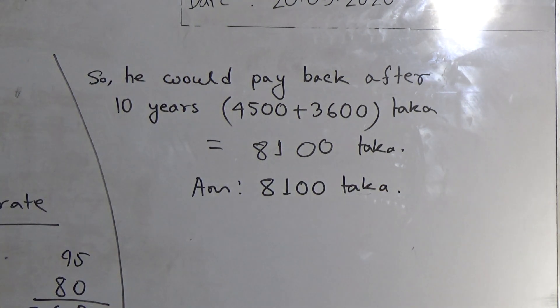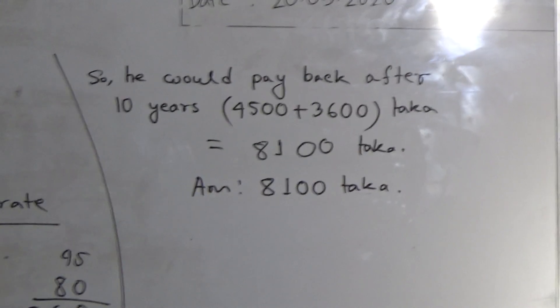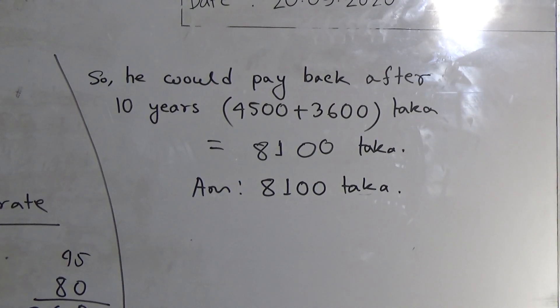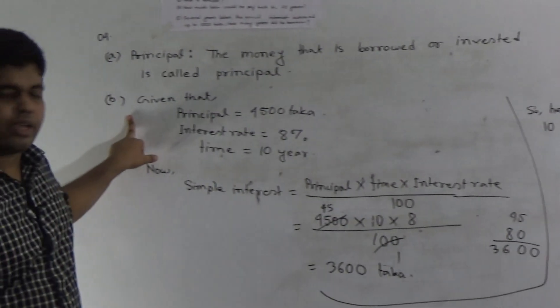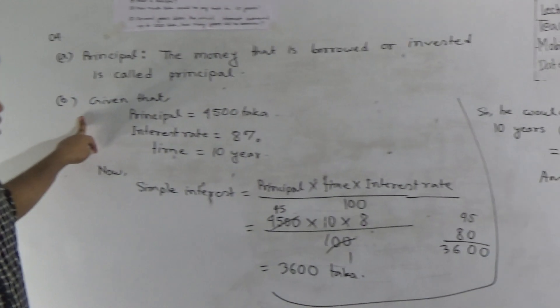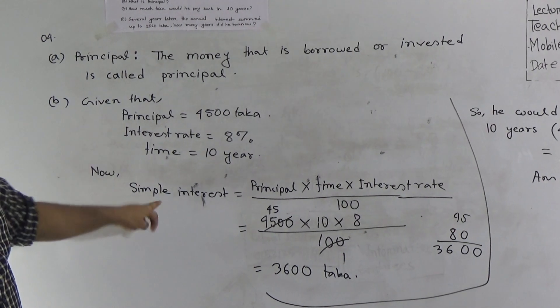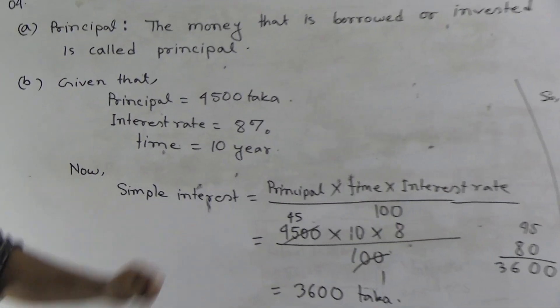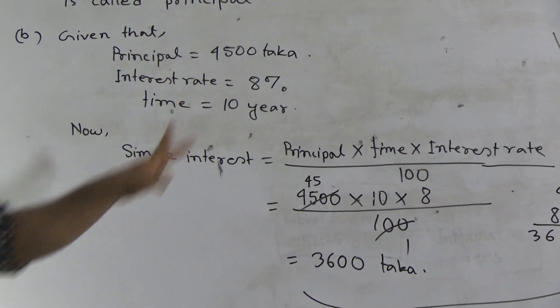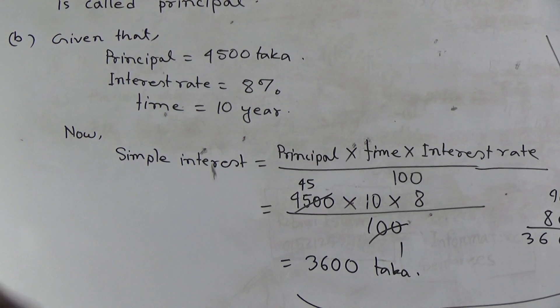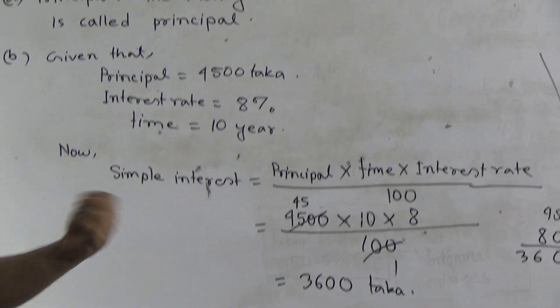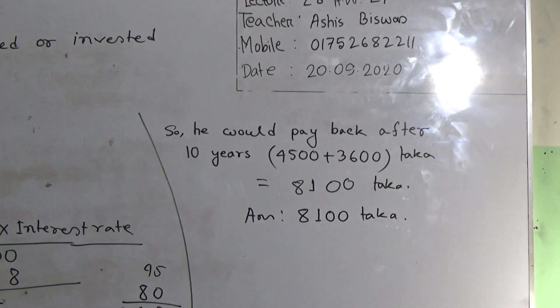I hope you have understood. This is question number B. To summarize: at first we find the simple interest, then we add that simple interest with the principal, which is the required answer for question number B. Next, we shall solve question number C. For solving question number C, I will erase question number A and B.